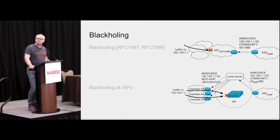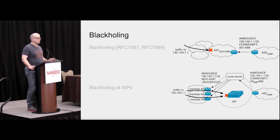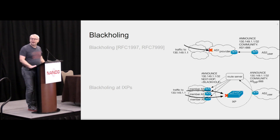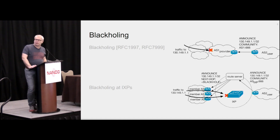In the simple situation, blackholing is provided by your upstream provider via a community. If one of your prefixes is attacked, you simply tag it with the blackhole community, announce this more specific to your upstream, and then your upstream already drops traffic for this prefix at its border ingress, so that the traffic does not even reach your network.